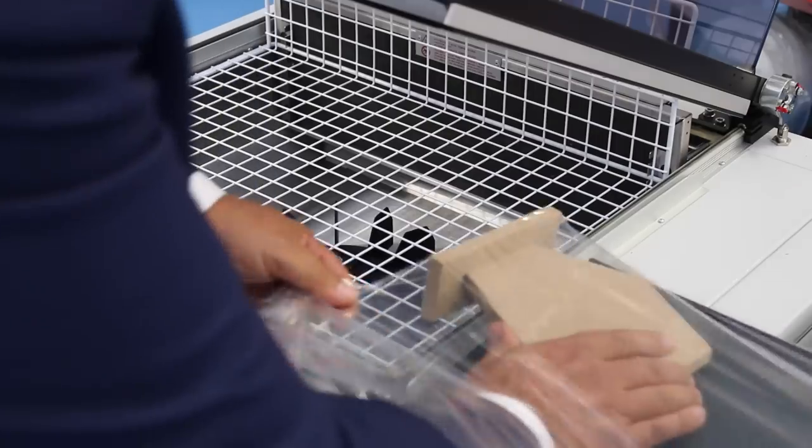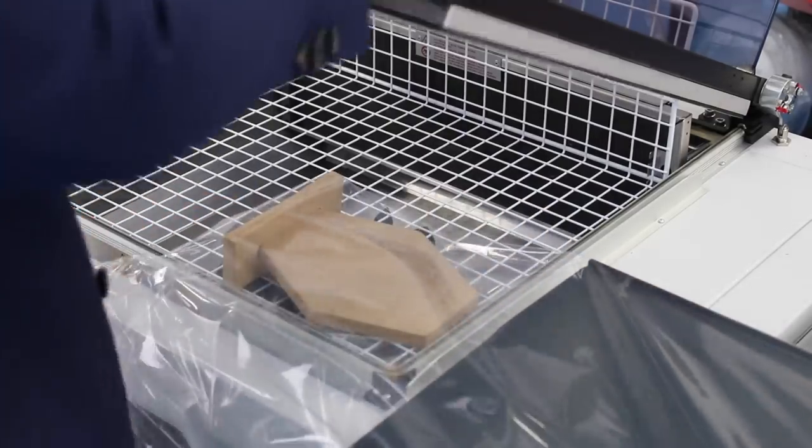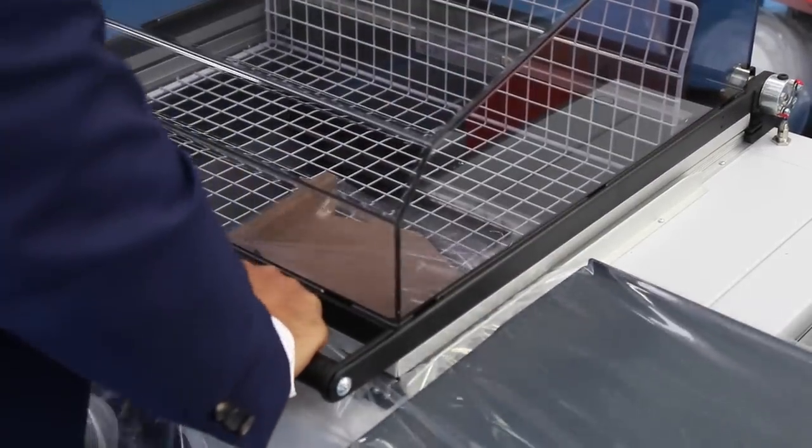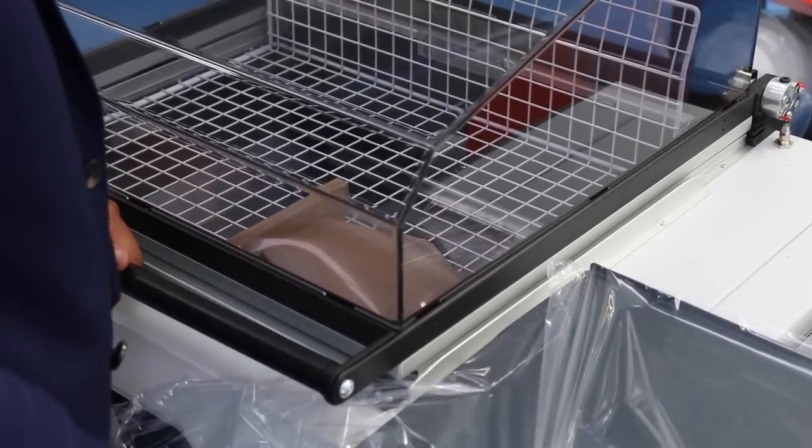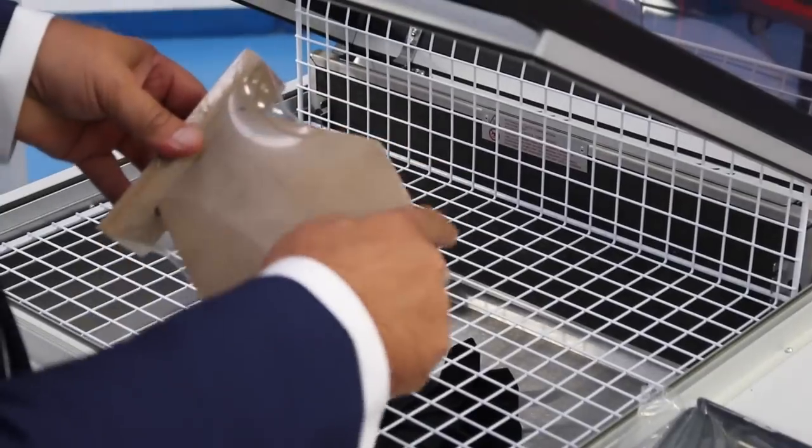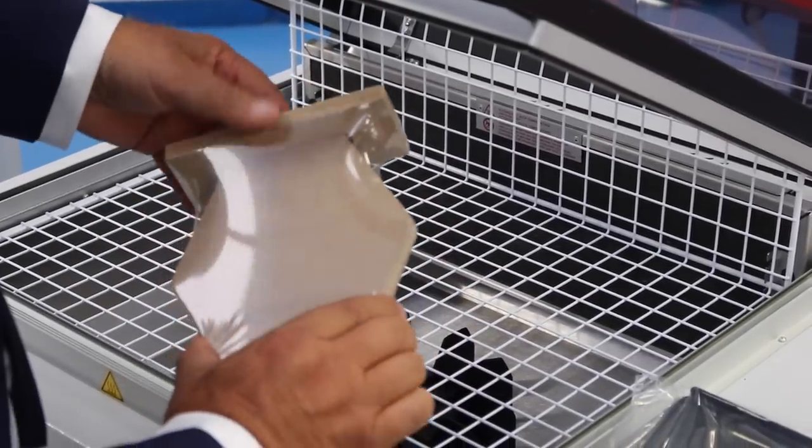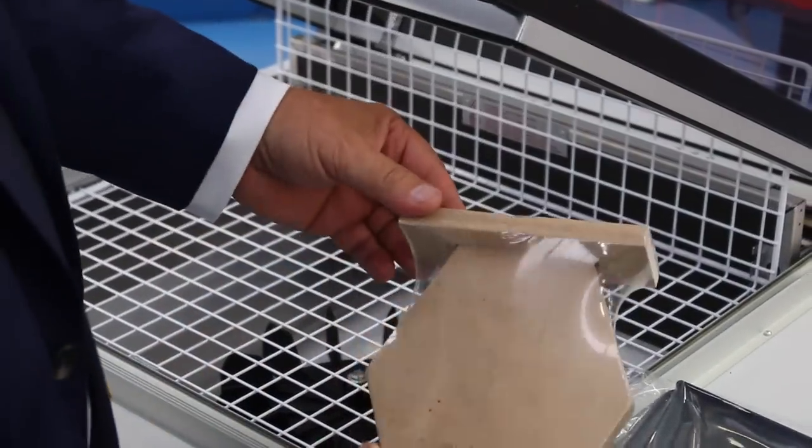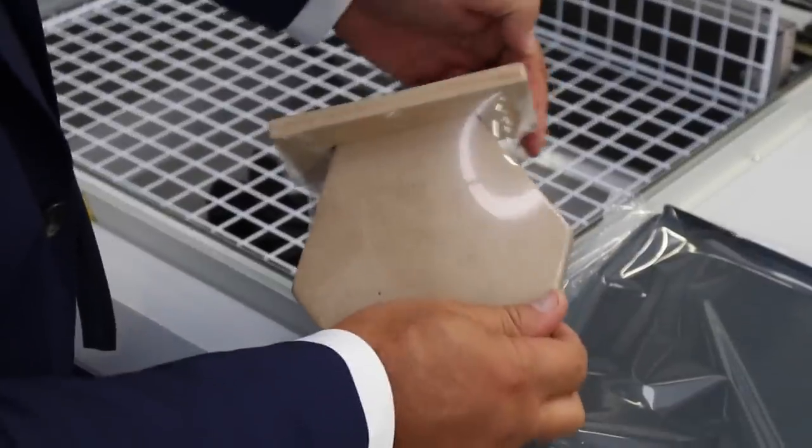For example, with the soft shrink I can make shrinks also on products like this. Very difficult to shrink. We have this angle. You see, with the soft shrink I can have a result like this.